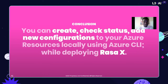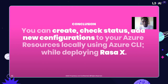In conclusion, you can create, check status, and add new configurations to your Azure resources locally using the Azure CLI while deploying Rasa X. This is specific to the Linux terminal — if you have a Linux OS or package installer, that's a good starting point. Make sure you have purchased a Linux image for your VMs, and for Kubernetes, ensure you have an active subscription. Also make sure you have the appropriate privileges to navigate your root folder, so that by the time you reach the Azure CLI, the only thing remaining is to manage and create Azure clusters and VMs.